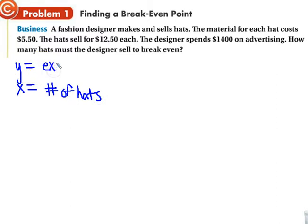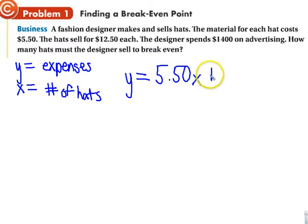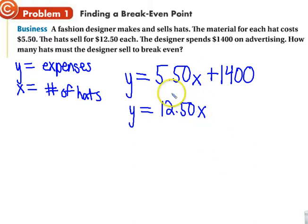And y is the expenses. So y equals how much the designer spends per hat plus how much they spent on advertising. So y equals $5.50 times the number of hats, because that's how much they pay to make the hats, and then this is how much they spend on advertising. In terms of how much they make, they make $12.50 per hat. We're looking for when these two things are equal.